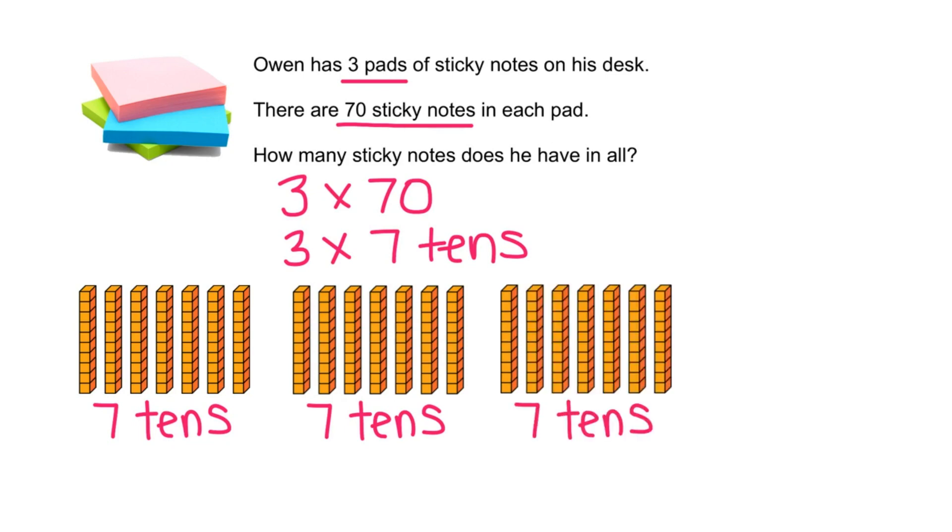Let's skip count those tens. 7, 14, 21. So 3 times 7 tens is equal to 21 tens.